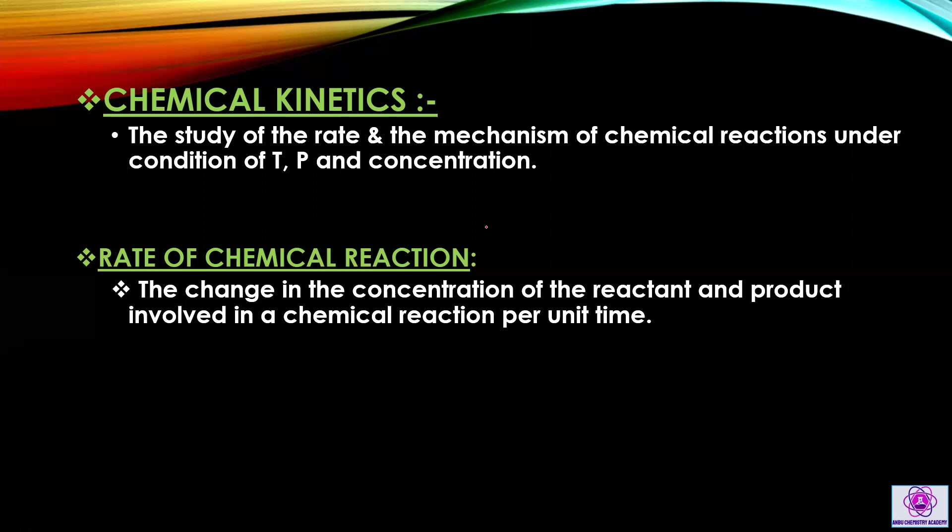The rate may differ from reaction to reaction. One reaction may finish in 5 seconds — that would be a very fast reaction. One reaction may take a second, another a minute, another an hour, another a day, another a year. So per unit time, it varies from reaction to reaction. The rate of chemical reaction is defined as the change in the concentrations of the reactant or product per unit time.